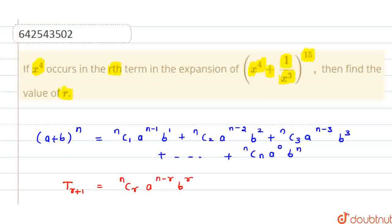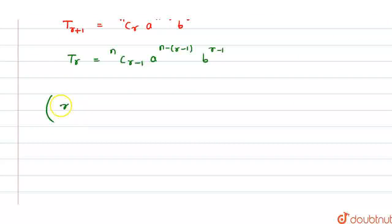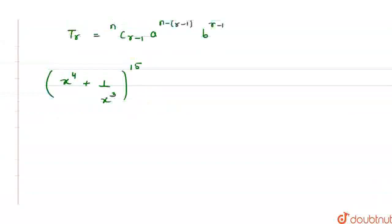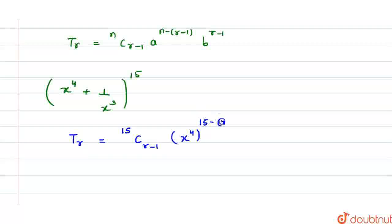Our expression is x raised to the power 4 plus 1 by x cubed, whole raised to the power 15. Here, a is x^4, b is 1/x^3, and n is 15. So let us substitute the values. The rth term, T_r, will be 15C(r−1) · (x^4)^(15−r+1) · (1/x^3)^(r−1).